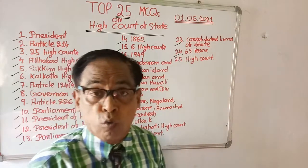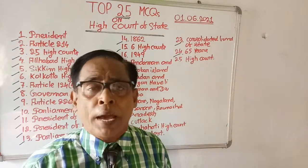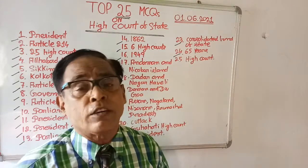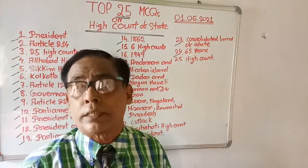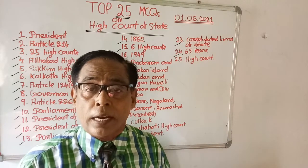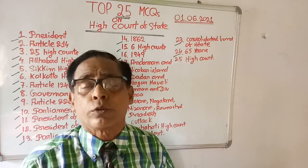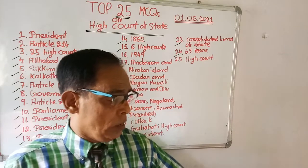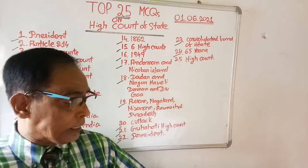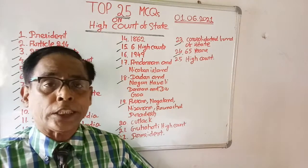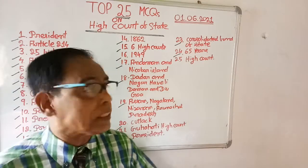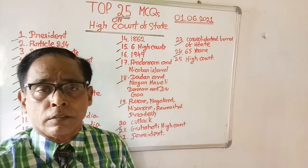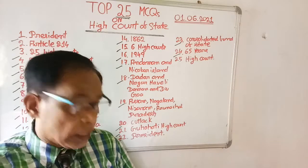Question number fourteen: Calcutta High Court was established in which year? You know it very well that Calcutta High Court is the oldest, but in which year was it established? Options are: 1861, 1847, 1862, and 1848. The right answer is 1862 — Calcutta High Court was established in 1862.